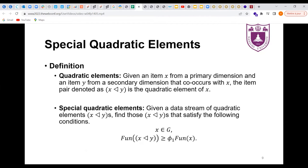Here, we first introduce a new concept, quadratic elements. Given an item X from a primary dimension and an item Y from a secondary dimension that co-occurs with X, the item pair denoted as X, Y is the quadratic element of X. Finding special quadratic elements is to find X, Y satisfying the following conditions: X belongs to a set G, and f(X, Y) is no less than phi times f(X).